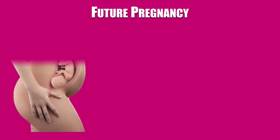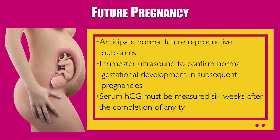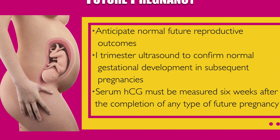In general, patients with both complete vesicular mole or partial mole can anticipate normal future reproductive outcomes. However, due to the risk of recurrent hydatidiform mole, patients with prior vesicular mole are advised to have a first-trimester ultrasound to confirm normal gestational development in subsequent pregnancies. Additionally, serum beta-HCG must be measured 6 weeks after completion of any type of future pregnancy — e.g., a term delivery, spontaneous miscarriage, or induced abortion — to exclude choriocarcinoma. The placenta should be carefully examined and sent to pathology if any abnormalities are present, and all products of conception from miscarriages should be examined pathologically.